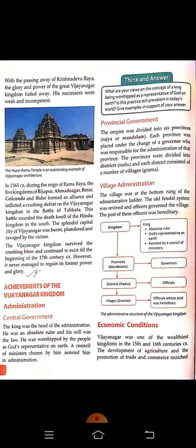Society: The Vijayanagara rulers revived ancient Vedic customs, so there were no major social or cultural changes during this reign. The society was conservative and governed by religious norms. The caste system was rigid. The Brahmans were powerful and held in high esteem. Women in general were respected but did not enjoy much freedom. Child marriage and sati were common practices. However, a few upper-class women occupied high positions in society and participated in social, literary, and even political life.